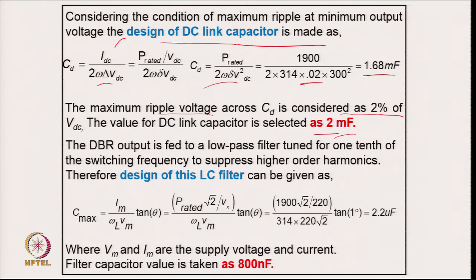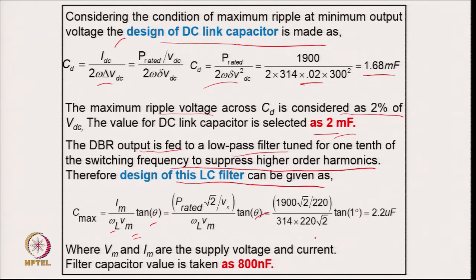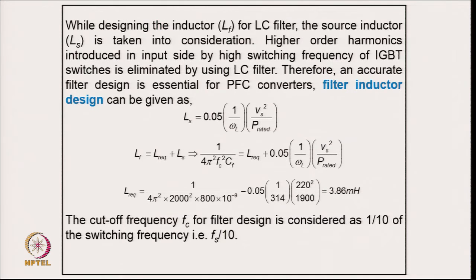Coming to the EMI filter design for Example 3: the diode rectifier output is fed to a low-pass filter tuned at one-tenth of the switching frequency to suppress higher-order harmonics. The filter capacitor is designed from C_max = I_m / (V_m × ω_l × tan θ), with θ = 1 degree, giving 2.2 μF. A lower value of 800 nF is selected. The source inductor is taken into consideration while designing the filter inductor.